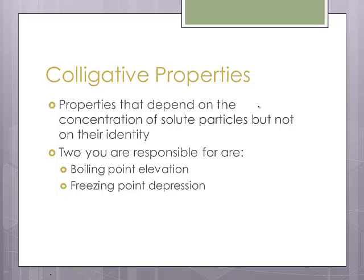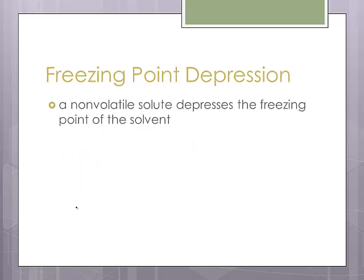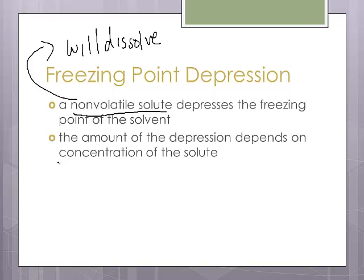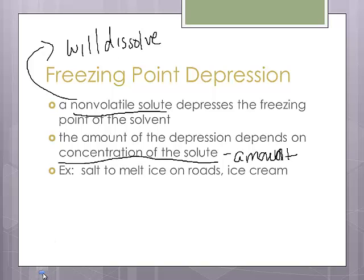Now, what a colligative property is, is a property that depends on the concentration of solute particles, in other words, how much stuff is dissolved. And there are two that you're responsible for that their names are pretty self-explanatory: boiling point elevation and freezing point depression. Freezing point depression means a non-volatile solute, non-volatile is a fancy way for meaning that it will actually dissolve in something, will depress the freezing point of the solvent. The amount of this depression depends on the concentration of the solute or the amount. So if you have more stuff, then you're going to be able to lower the freezing point that much more.